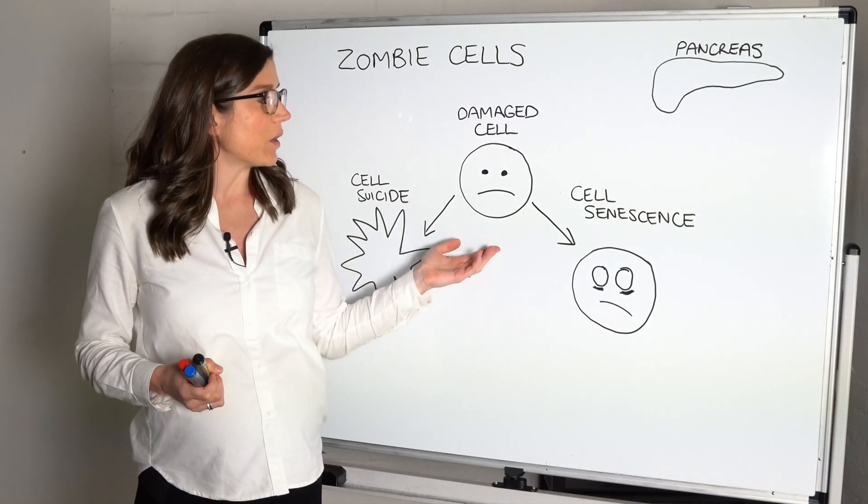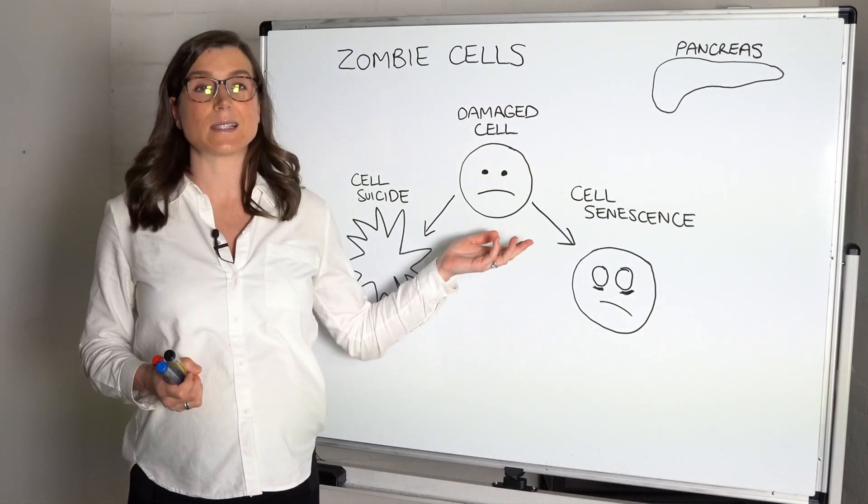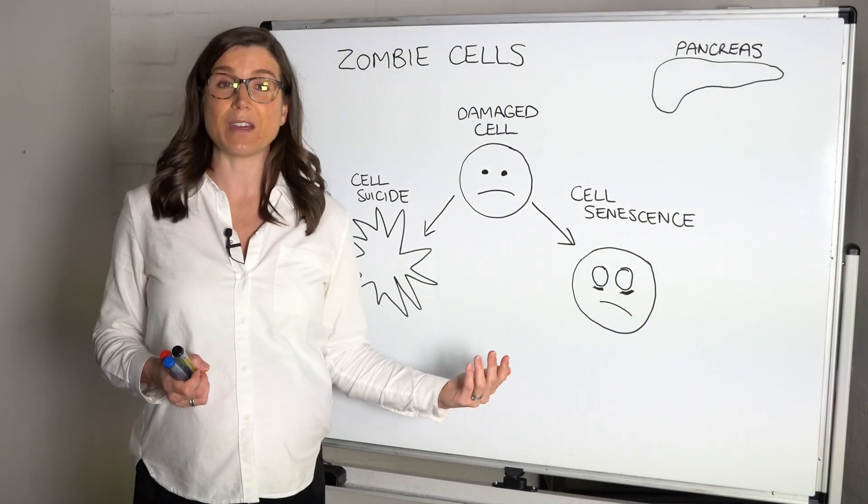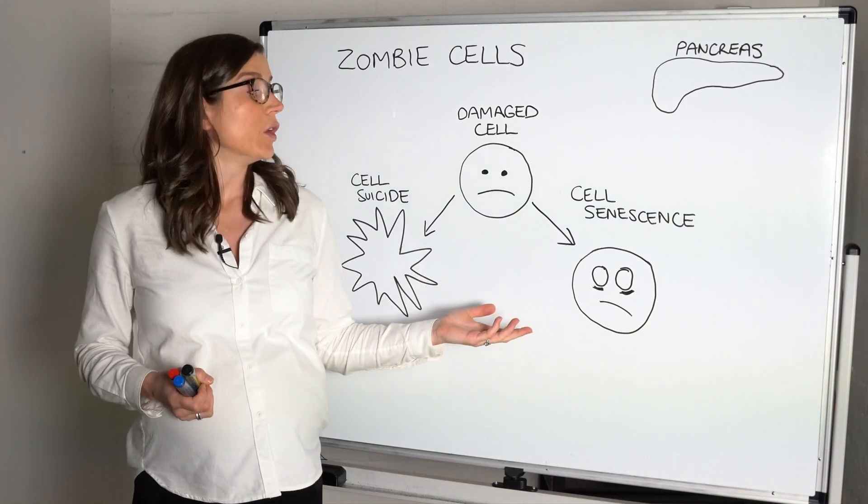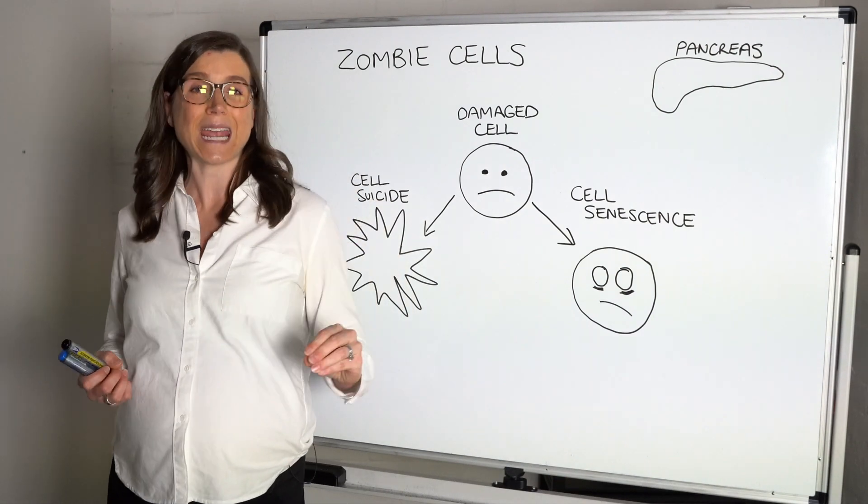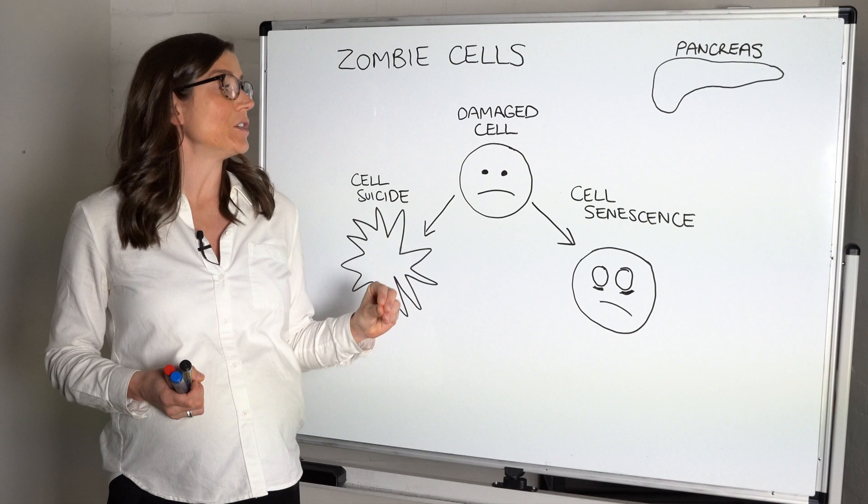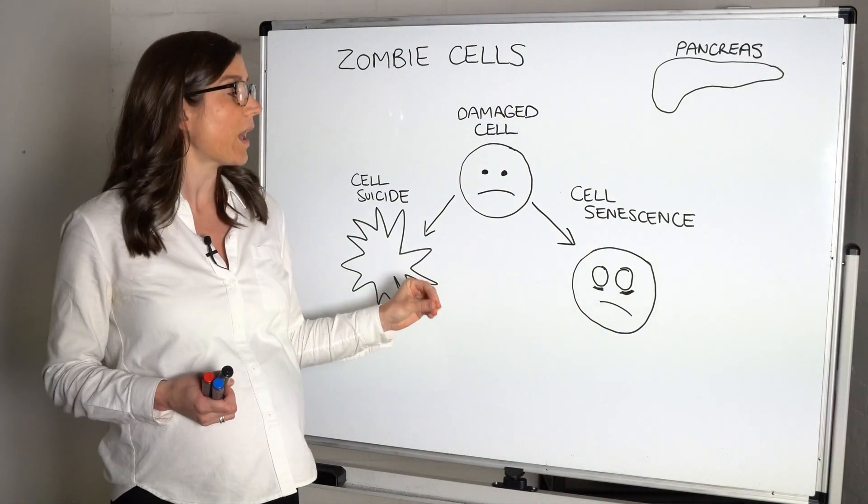The other thing that can happen is the cell can become a zombie cell. So we call this cellular senescence, and in the short term this is a good thing because we don't want that damaged cell to go on to become a cancer cell. So this cellular senescence in the short term is actually a protective mechanism—it's protecting us from these damaged cells replicating and potentially causing problems.